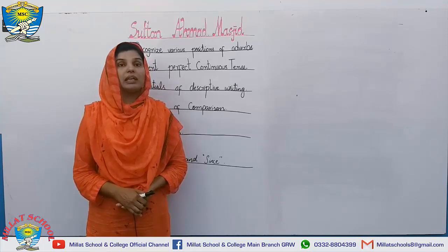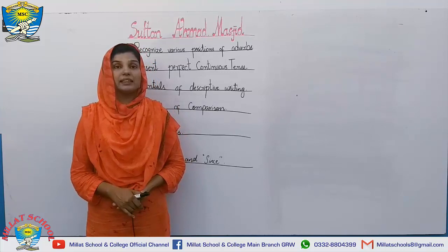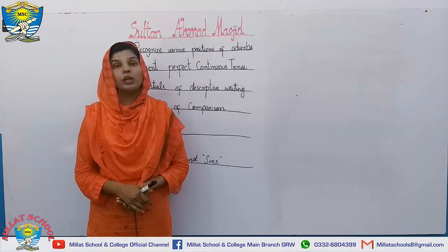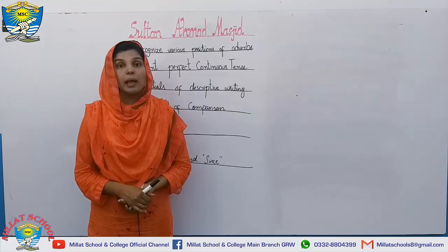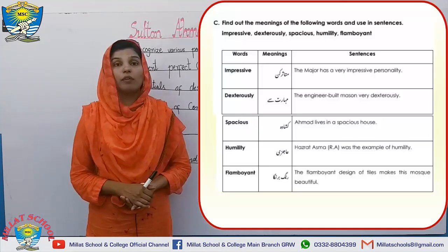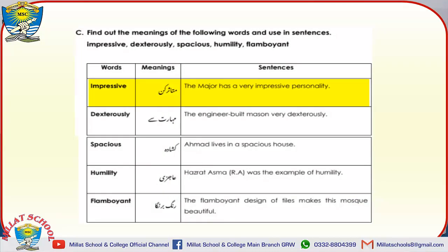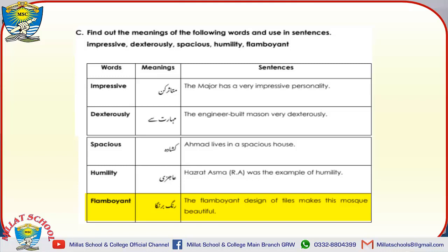In the next vocabulary activity, you have to make sentences from specified words. I have given you complete important words with their sentences in my previous lecture, but here are the specific sentences: 'impressive' — The major has a very impressive personality. 'Dexterously' — The engineer built a mason very dexterously. 'Spacious' — Elwood lives in a spacious house. 'Humility' — Hazrat Asma was the example of humility. 'Flamboyant' — The flamboyant design of tiles makes this mosque beautiful.